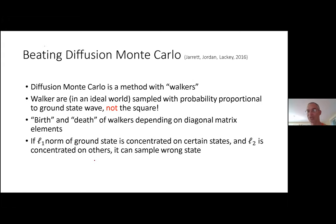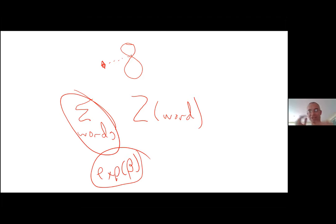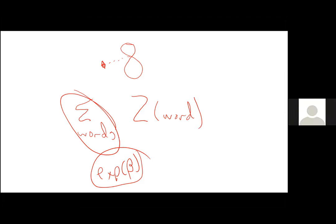You can bootstrap this inability to estimate the energy into an inability to solve the adiabatic problem. Construct a setting with a figure-eight-like graph and an additional site: the extra site starts with low energy, you turn on tunneling to the figure-eight, raise the energy of the additional site, then turn off tunneling. If you correctly compute the energy of the figure-eight at the end, you wind up on it; if you misestimate it, you stay on the single site. So path integral Monte Carlo samples the wrong ground state.